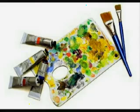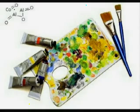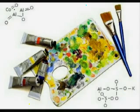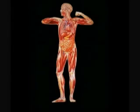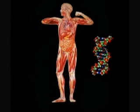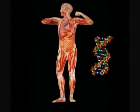Why can't paintings paint themselves? Simple — because they're made of chemicals that can't replicate themselves. Living matter, on the other hand, does contain a chemical that can replicate itself. Even if God made DNA, he doesn't need to intervene every time animals mate. The DNA does the job on its own.